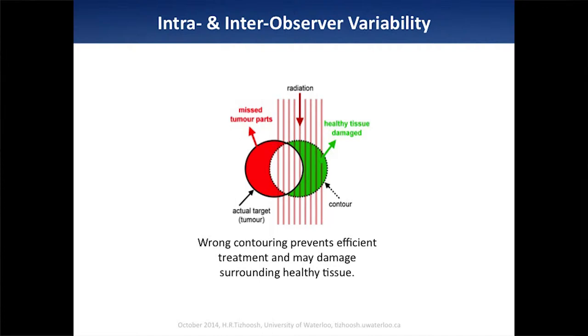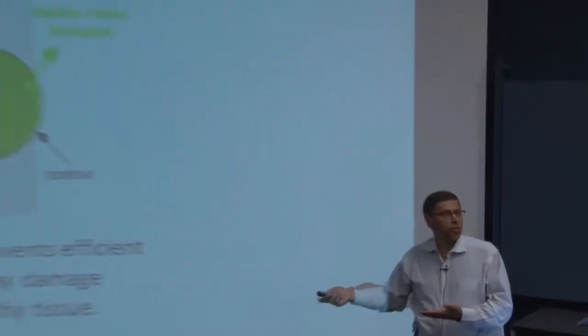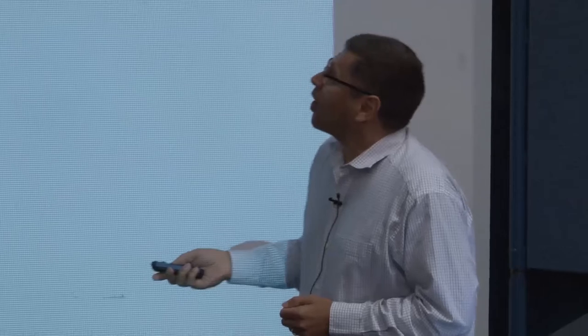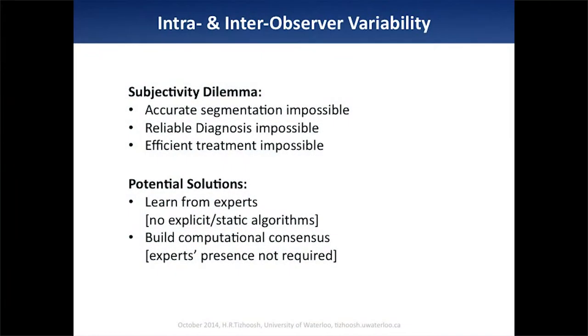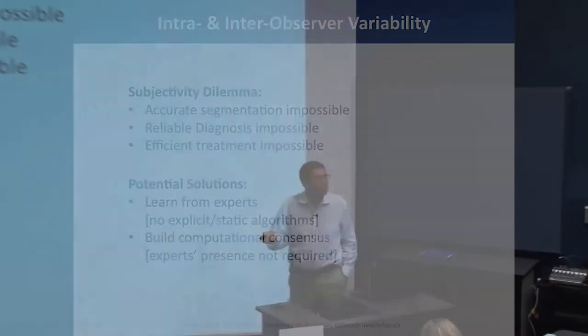When the red area is the tumor and the green area is the healthy tissue, and there is so much difference, you end up hitting healthy tissue during radiotherapy and not completely hitting the tumor — because nobody knows where the tumor is. The subjectivity dilemma stems from the nature of things and the limitations of imaging: accurate segmentation is basically impossible, reliable diagnosis is impossible, and efficient treatment is impossible if we cannot agree on where things are.